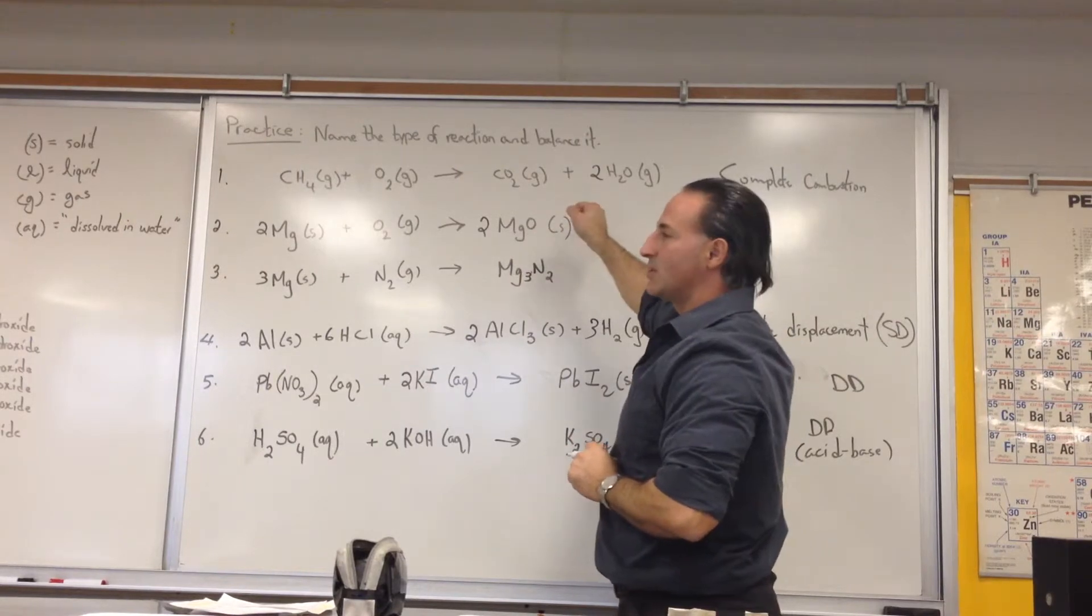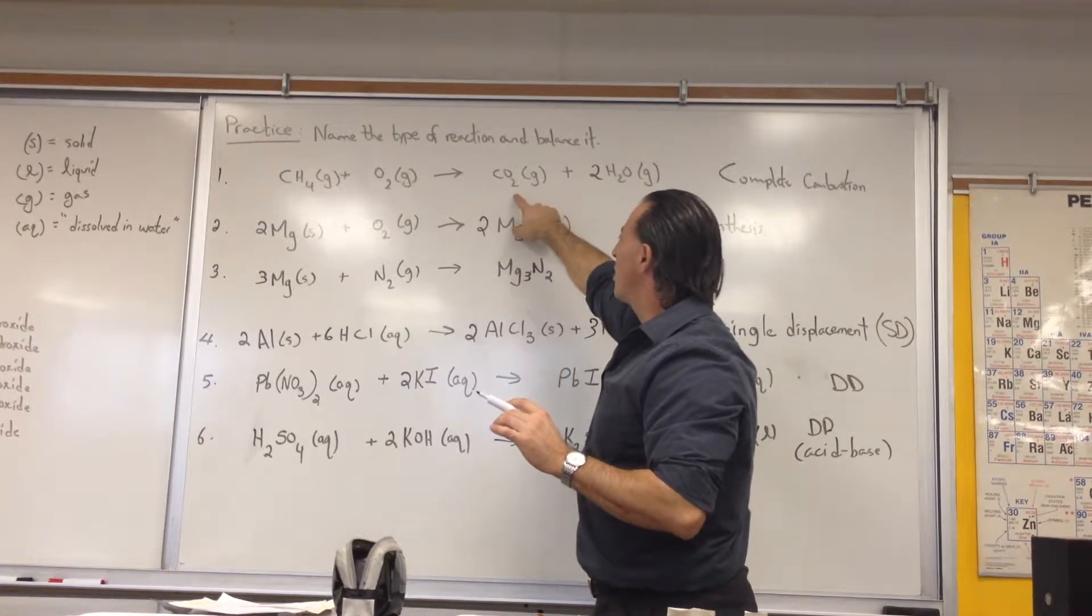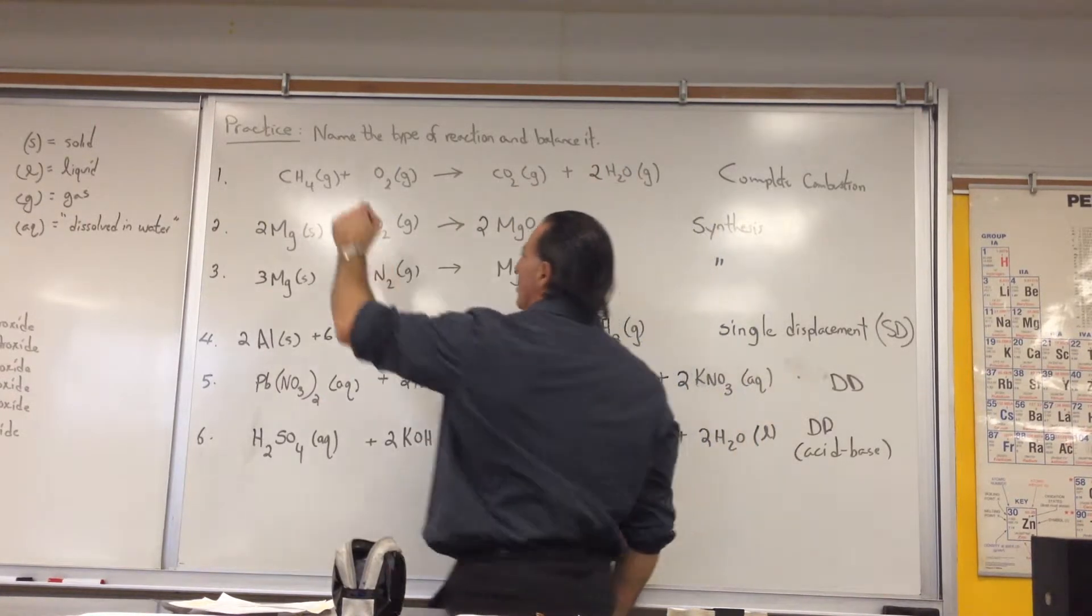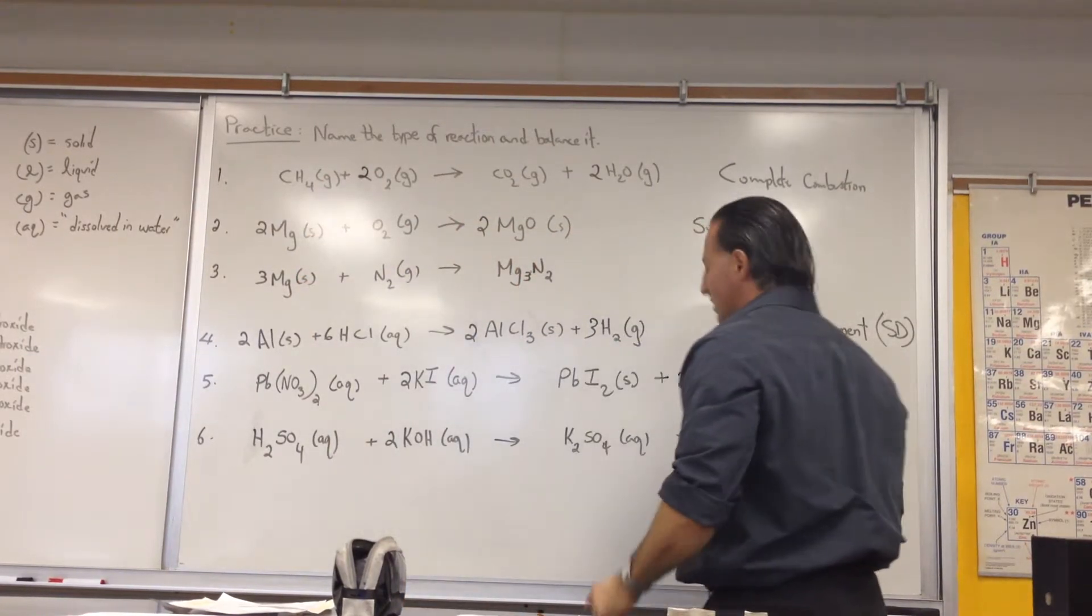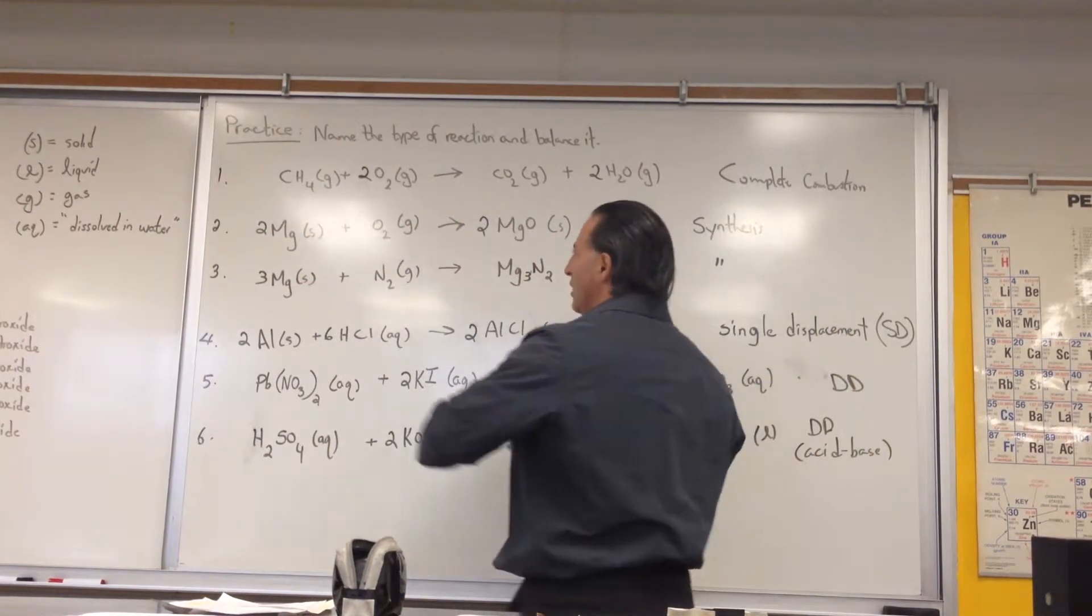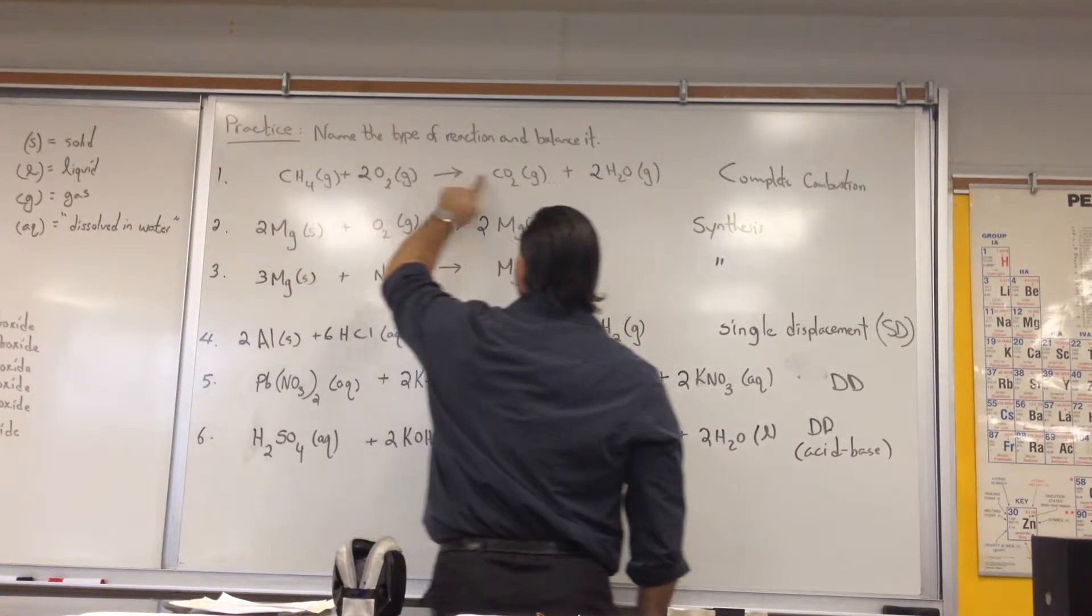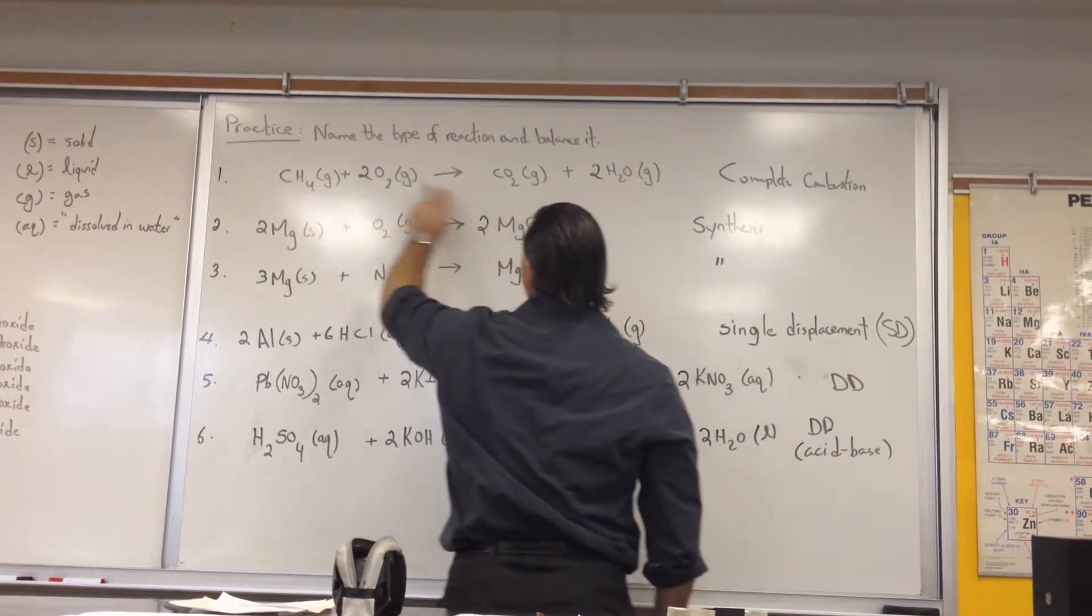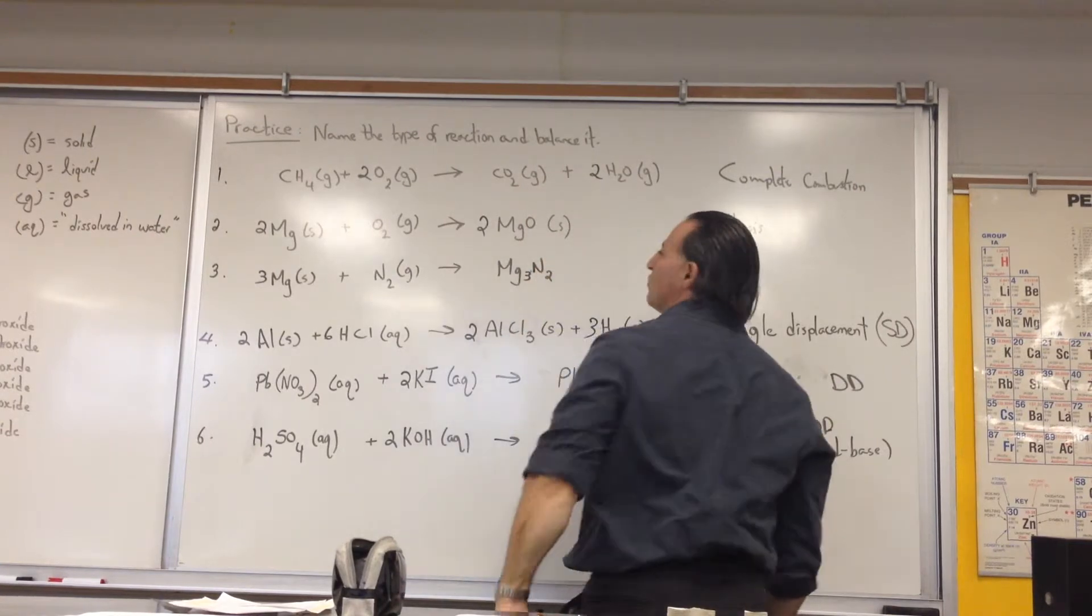Once you've done carbon and hydrogen, the last thing to worry about is oxygen. There's two oxygen atoms over here, two oxygen atoms over there. That's four oxygen atoms on the right, so you're going to put two in front of the oxygen on the left. And now it all balances. One of the ways you can check is to go systematically from left to right: one carbon, one carbon; four hydrogens, four hydrogens; four oxygens, and two plus two is four oxygens.